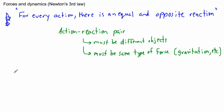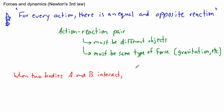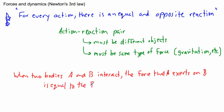Another way to state Newton's third law: when two bodies — two objects — A and B interact, the force that A exerts on B is equal to the force that B exerts on A. As long as two objects are interacting as an action-reaction pair — different objects, same type of force — the force one gives to the other is the same magnitude.